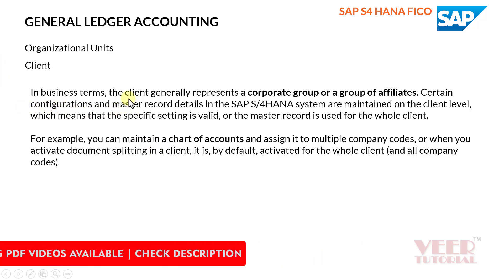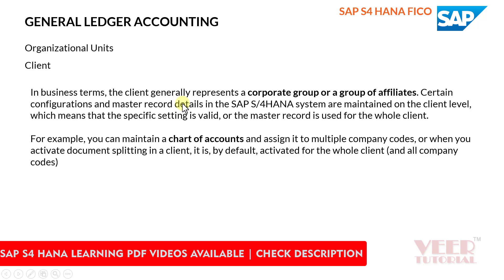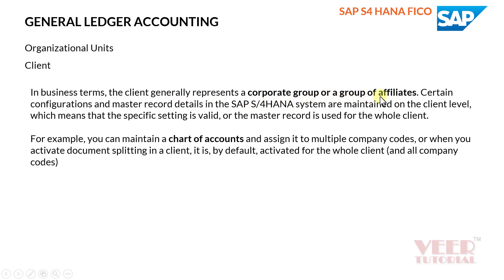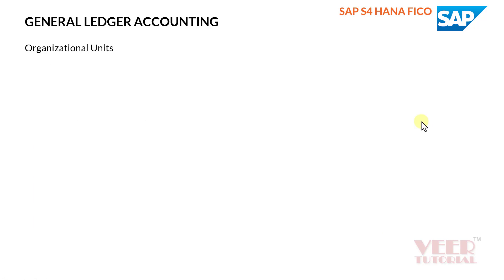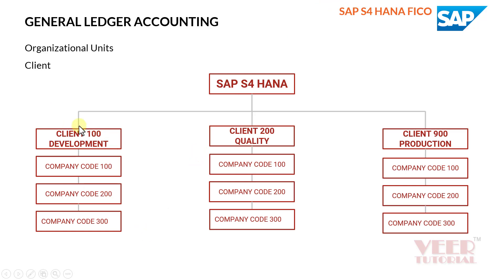In business terms, the client generally represents a corporate group or group of affiliates. Certain configuration and master records in SAP S4 HANA system are maintained on the client level only, which means that a specific setting is valid or a master record is used for the whole client. Within a client, we may have different company codes.